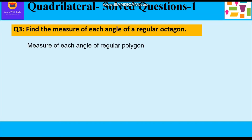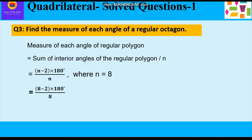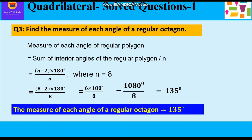The measure of each angle of a regular polygon is given by the formula: [(n − 2) × 180°] ÷ n. Since it's a regular octagon, n = 8. So: (8 − 2) × 180° ÷ 8 = 6 × 180° ÷ 8 = 1080 ÷ 8 = 135°. The measure of each angle of a regular octagon is 135°.